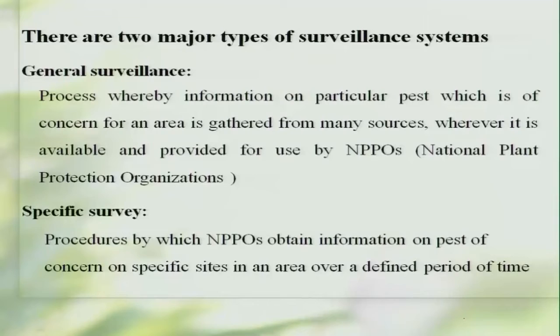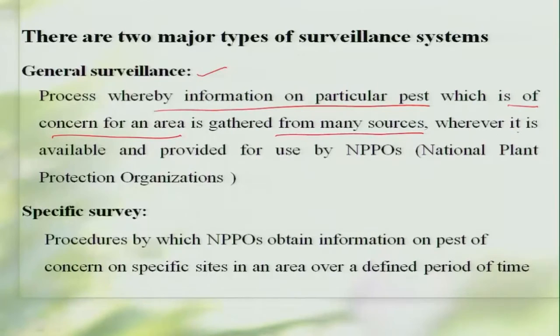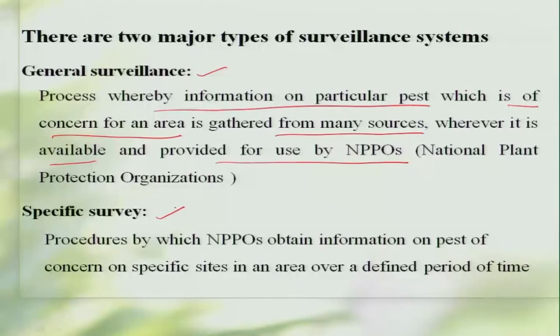There are two major methods of pest surveillance: general surveillance and specific surveillance. General surveillance is the process whereby information on a particular pest of concern for an area is gathered from many sources and provided for use by the National Plant Protection Organization, from localized or regional institutions. In specific surveillance, the National Plant Protection Organization obtains information on a pest of concern at specific sites over a defined period of time, restricted to a particular pest species.